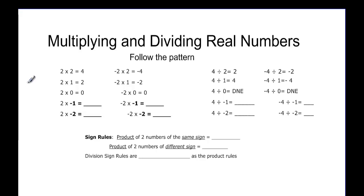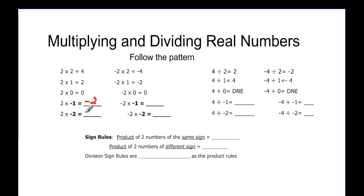In this video we'll talk about multiplying and dividing real numbers. Let's see if we can follow the pattern. Positive 2 times positive 2 is 4. 2 times 1 is 2. 2 times 0 is 0. And then 2 times negative 1 — if we look at the pattern it looks like we're decreasing by 2 every time, so it must be negative 2. And then 2 times negative 2, if we decrease by 2 again we're going to be at negative 4.